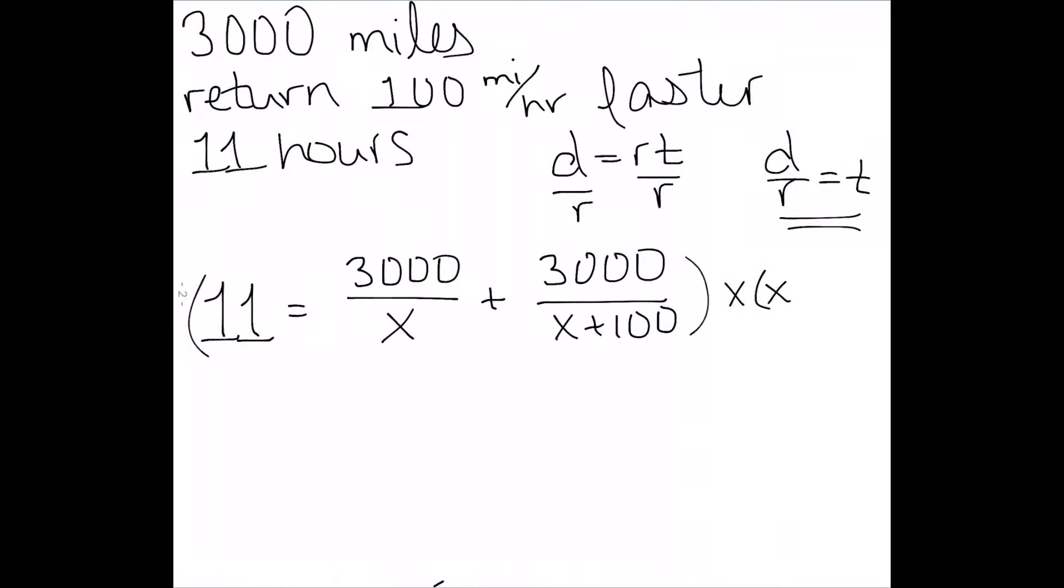We need to multiply by the common denominator, x times x plus 100. Here, I would have 11x times x plus 100 is equal to 3,000 times x plus 100, since the x's will cancel.